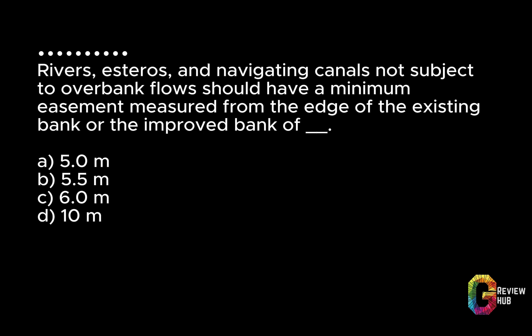Rivers, esteros, and navigating canals not subject to overbank flows should have a minimum easement measured from the edge of the existing bank or the improved bank of: A. 5.0 m. B. 5.5 m. C. 6.0 m. D. 10 m. Answer: B. 5.5 m.